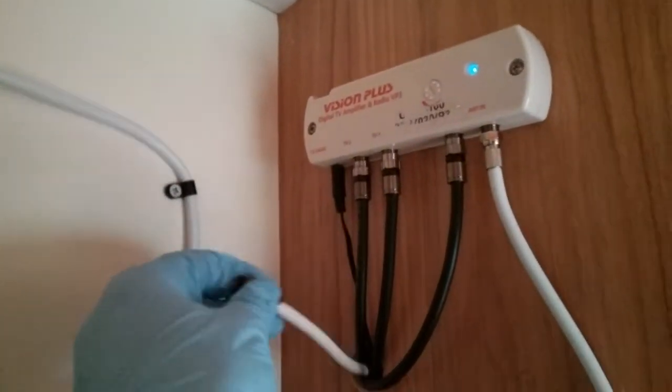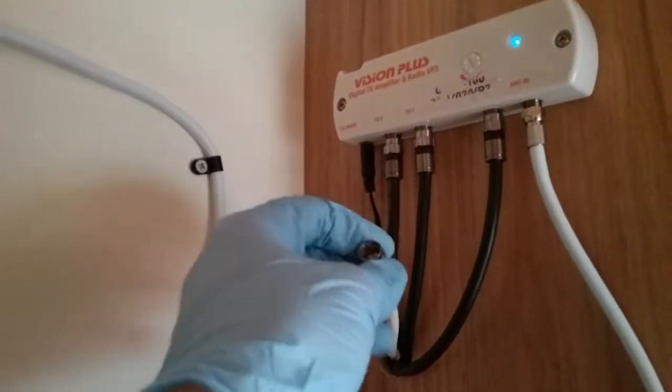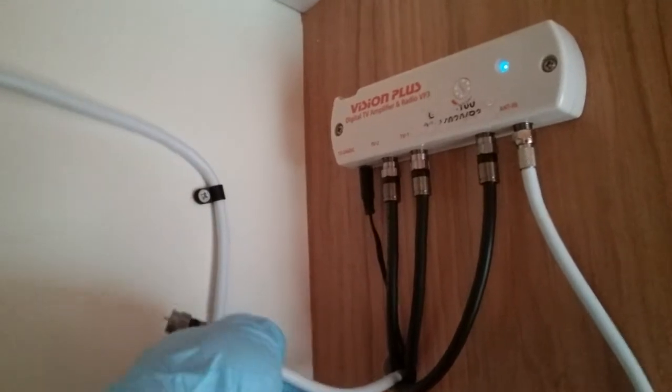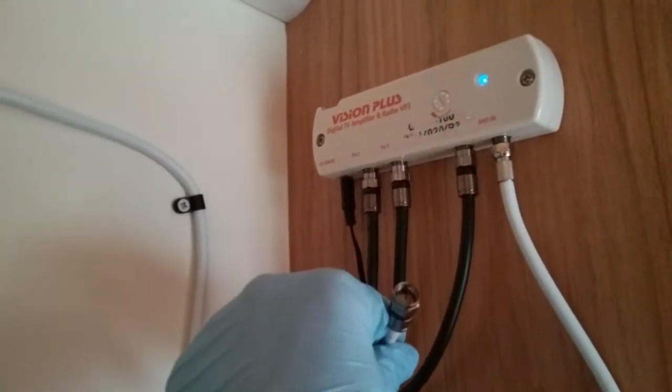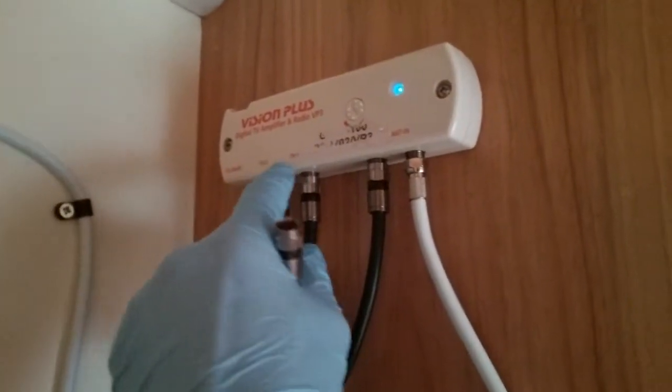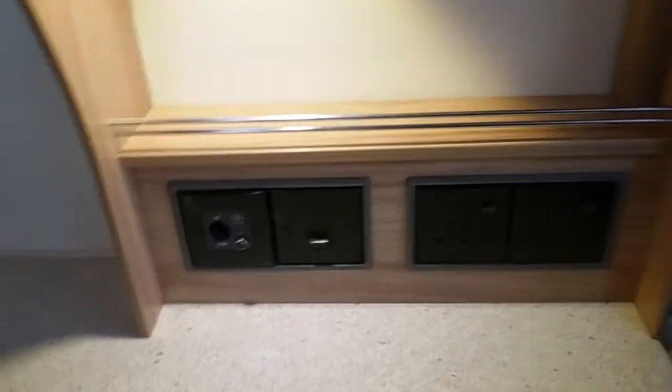This lead here goes directly to the external TV aerial point located in the battery box. So if you are going to be using a site's aerial or a free standing aerial of your own, you will need to undo either of the TV points that you want to be using this on. So we have a TV point at the front here, and another TV point just here.